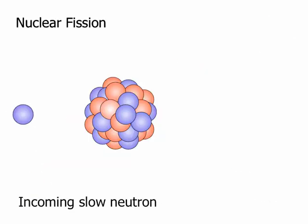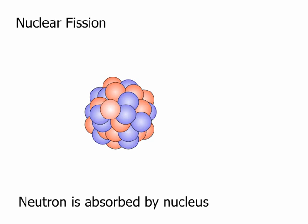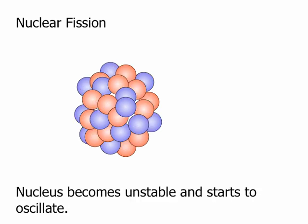It's basically a big nucleus which is made even more unstable by absorbing a slow-moving neutron, and when it splits up it gives off loads of energy in the form of heat generally.